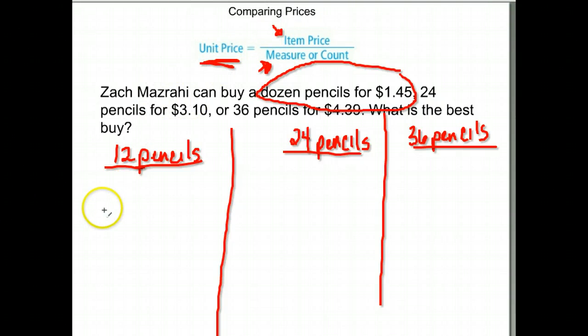Let's find the unit price for each of those. For the unit price, we take the price of the item. For the dozen pencils, it was $1.45, and we divide that by how many pencils there were. There were 12. So we go $1.45 divided by 12. The unit price for the dozen pencils is 12 cents.